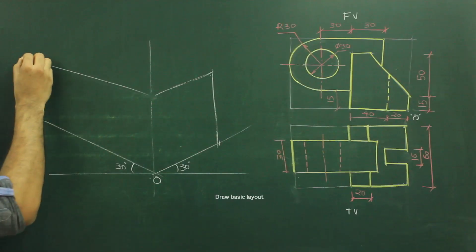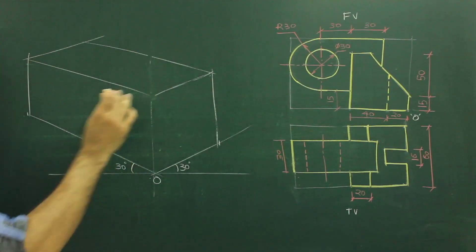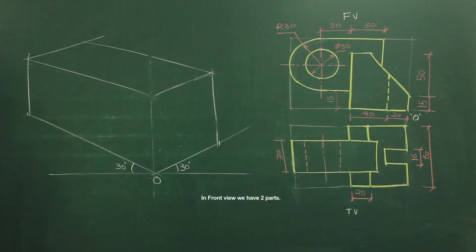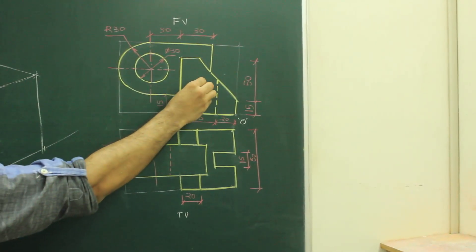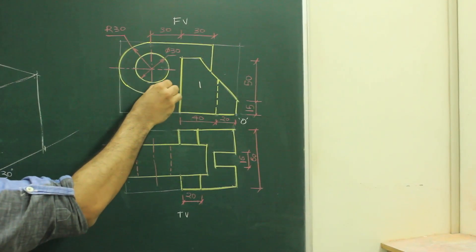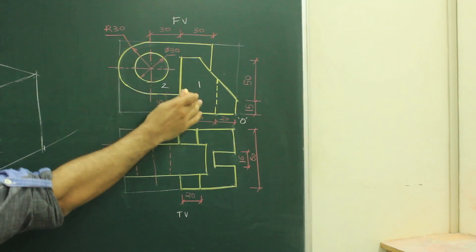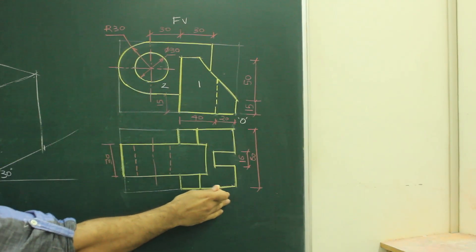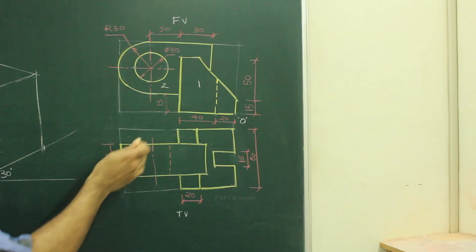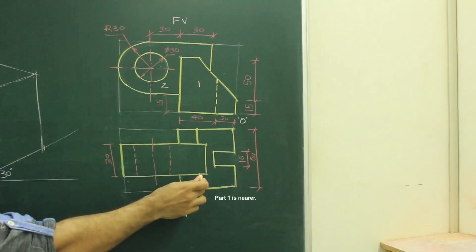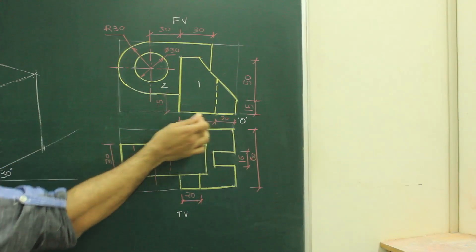First we will draw the layout. After drawing the layout we'll see the front view. In front view there are two parts: Part 1 and Part 2. Part 2 is behind, so Part 1 is nearer to us. So first we will draw Part 1 — height is 65, length is 60.